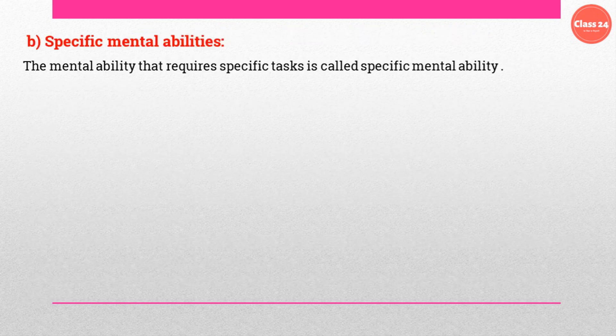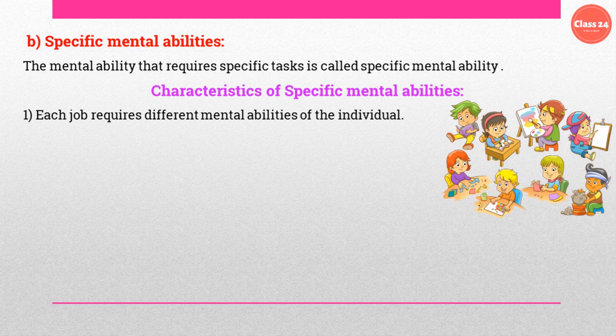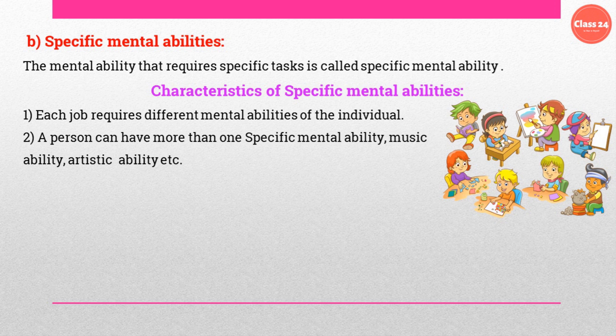Now we will discuss specific mental abilities. The mental ability required for a specific task is called the specific mental ability. Each job requires different mental abilities. For example, if you want to do painting or music, we need different types of mental abilities. In addition to the innate general mental ability, we need some specific mental ability to perform certain tasks.